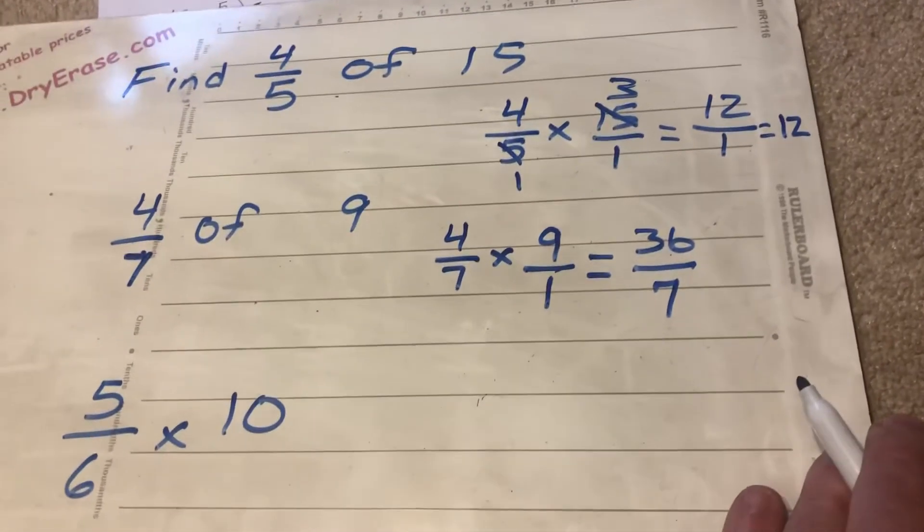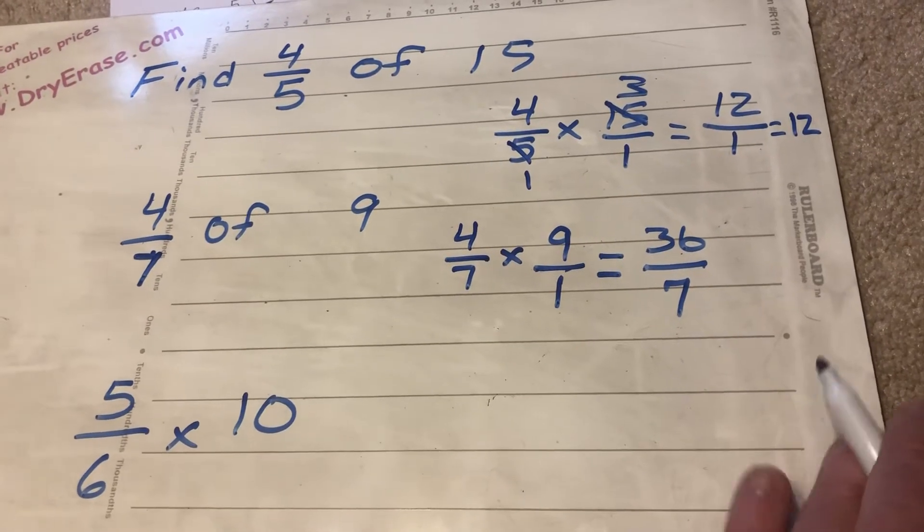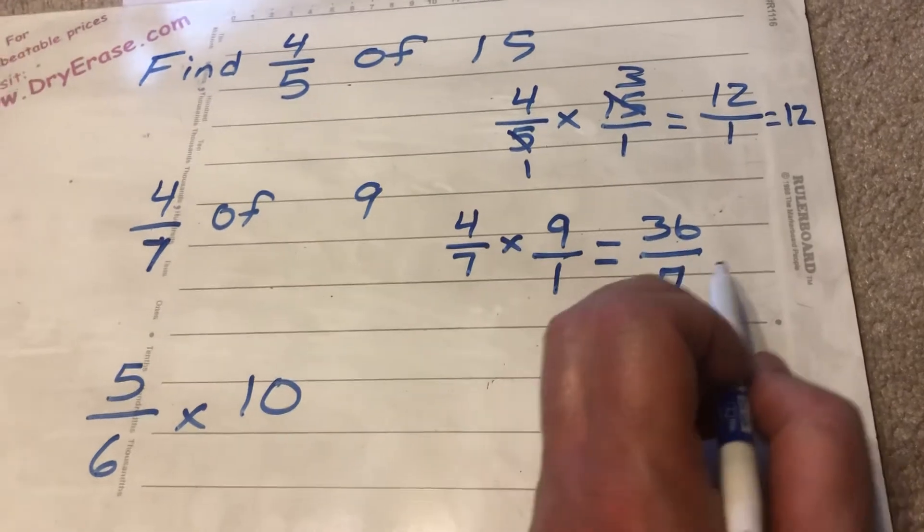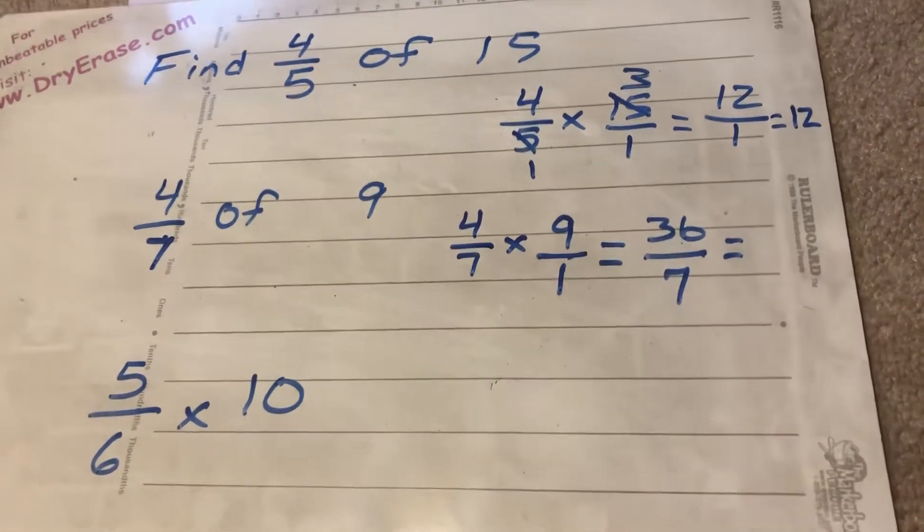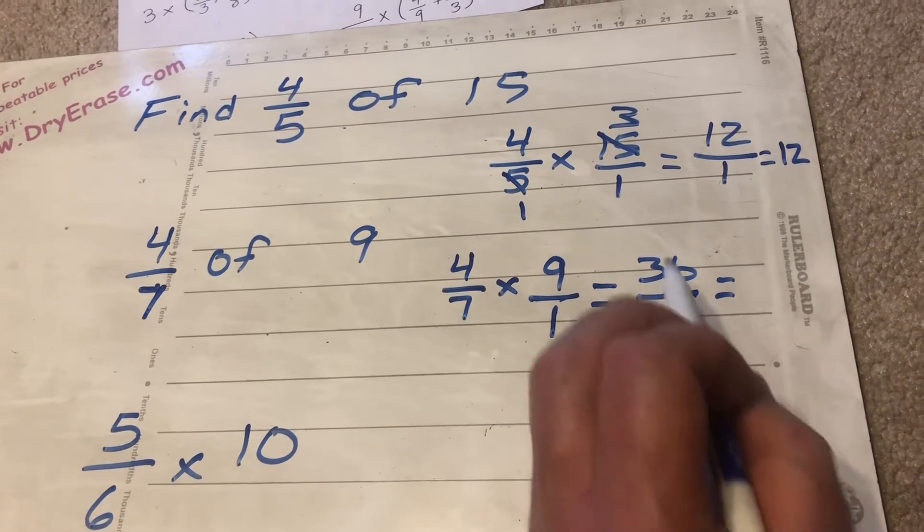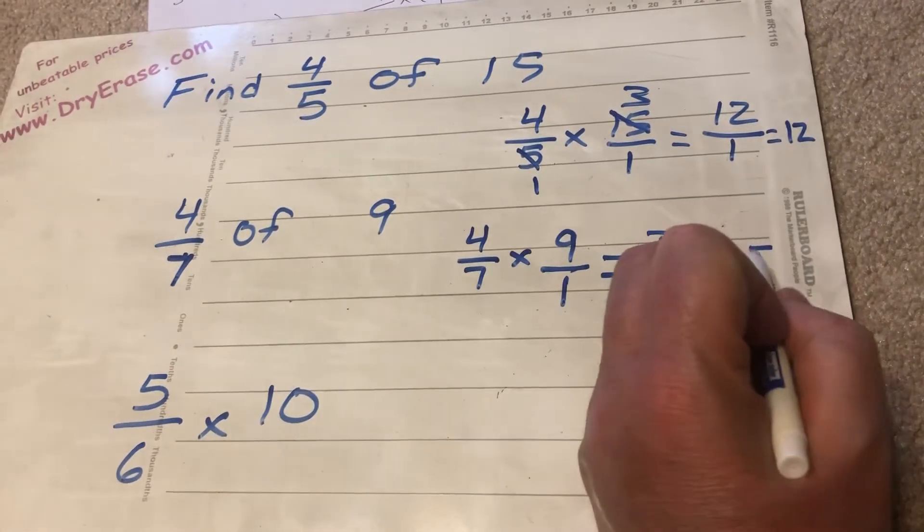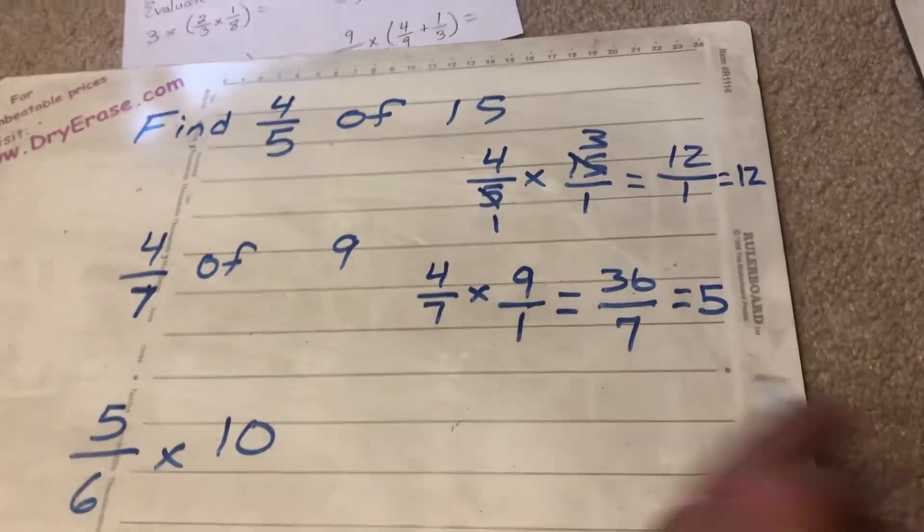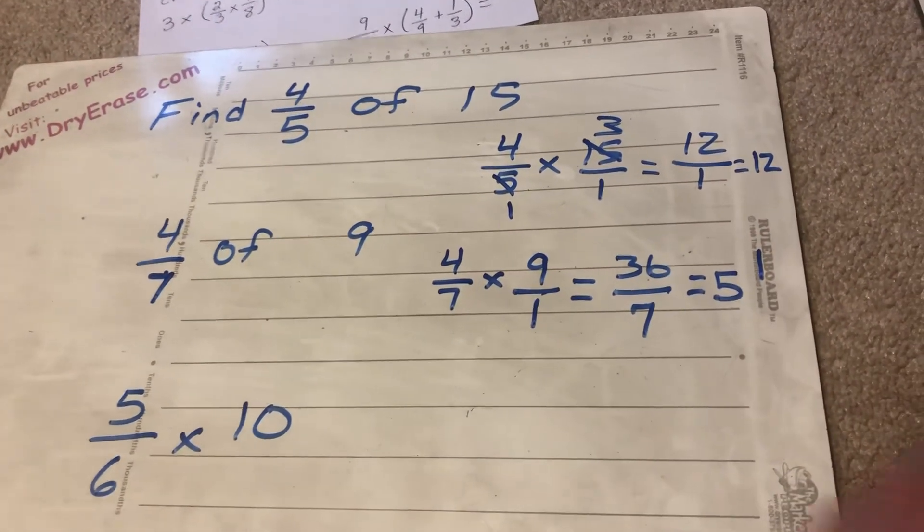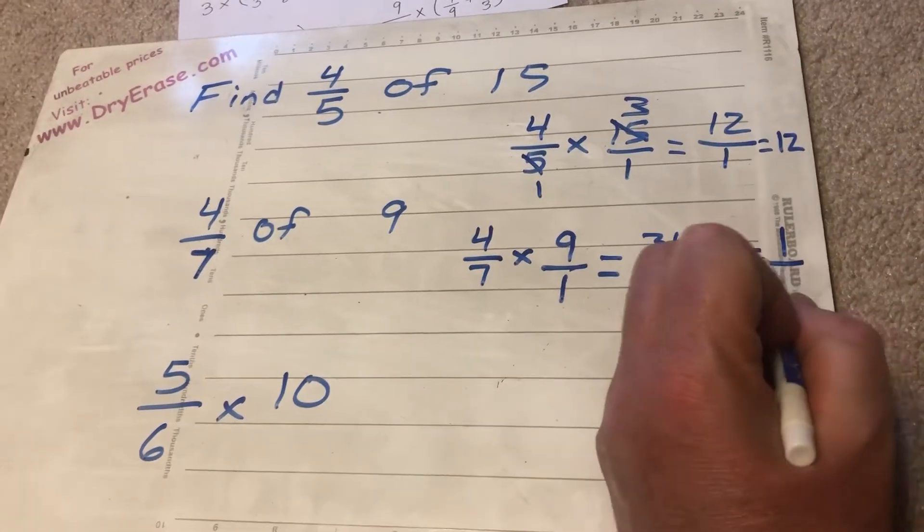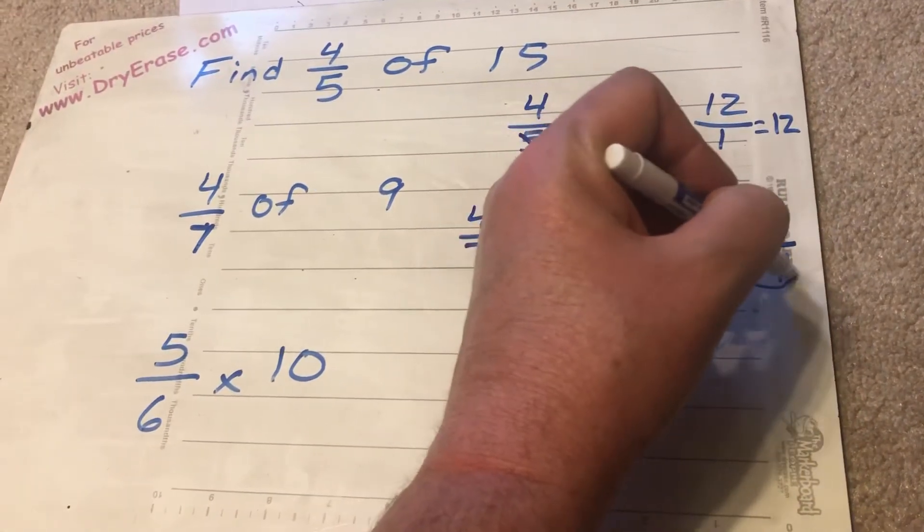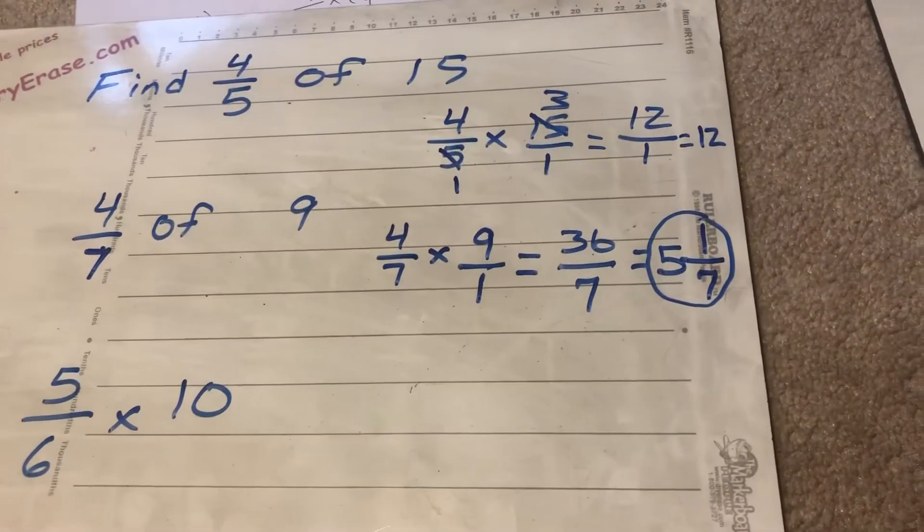Well I know it's in simplest form because nothing can go into both 7 and 36 other than 1. But I can't leave my answer like that. I can't leave it as an improper fraction. I have to turn it into a mixed number. When I think about my 7 times tables I realize well 7 can go into 36 five times. And if I take 7 into 36 five times there will be 1 left over. My denominator here is 7. So my denominator there is going to be 7.